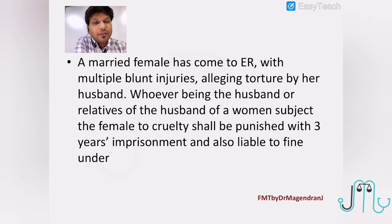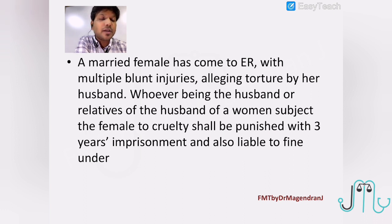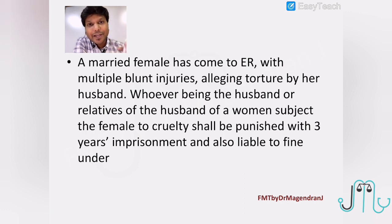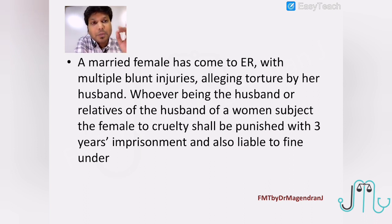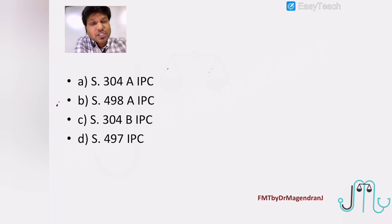A married female has come to the ER with multiple blunt injuries, alleging torture by her husband. Whoever being the husband or in-laws — the relatives of the husband — subjecting the female to cruelty shall be punished with three years imprisonment and liable for fine. Do remember, it is not dowry death. Only if the female dies because of dowry demand and torture can you say dowry death, which indicates Section 304b. Here, since it is only the cruelty — mental or physical cruelty to the married female by the husband or in-laws — it is punished under Section 498a IPC.